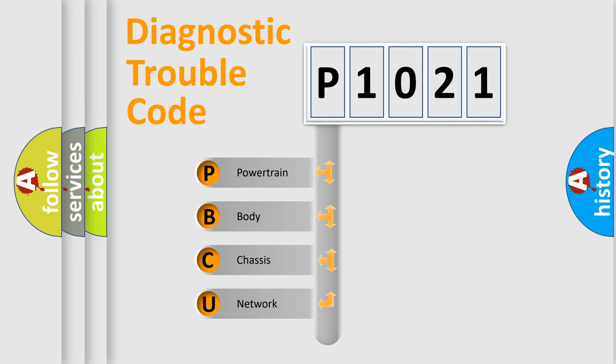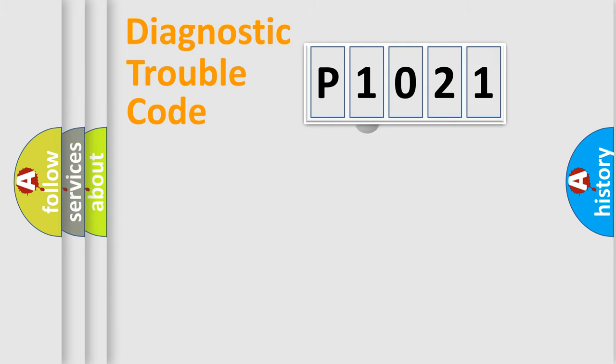We divide the electric system of an automobile into four basic units: powertrain, body, chassis, and network. This distribution is defined in the first character of the code.